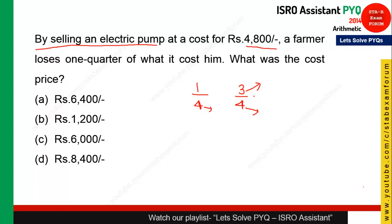He sold the electric pump at Rs.4800. So we set up: 3/4 × cost price = 4800, which gives cost price = 4800 × 4/3 = 6400. The denominator always corresponds to the original, which is the cost price, so Rs.6400 is the right answer. Option A is correct.